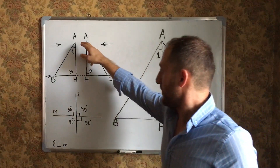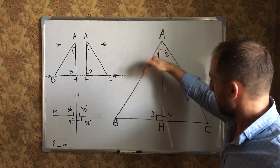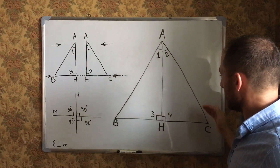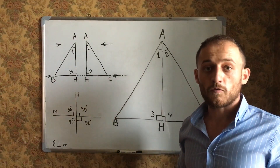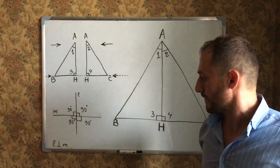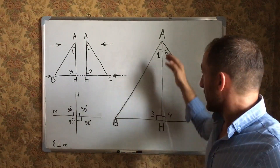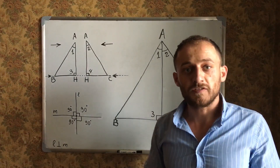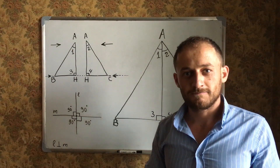Then AB is congruent to AC, because corresponding sides of congruent triangles are congruent. Therefore, triangle ABC is isosceles by the definition of an isosceles triangle.